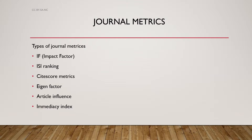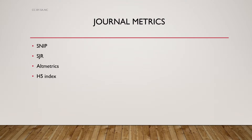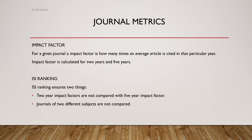The types of journal metrics are: Impact Factor, ISI Ranking, CiteScore metrics, Eigenfactor, Article Influence, Image Index, SNIP, SJR, AltMetrics, and H5 Index. The impact factor for a given journal is how many times an average article is cited in that particular year. Impact factor is calculated for two and five years.